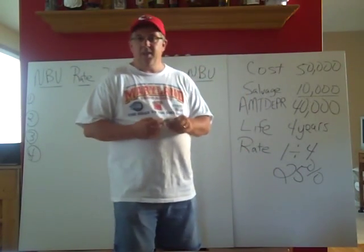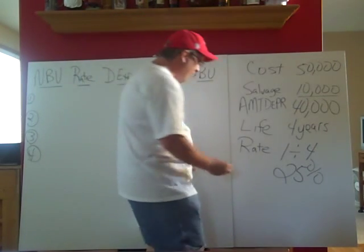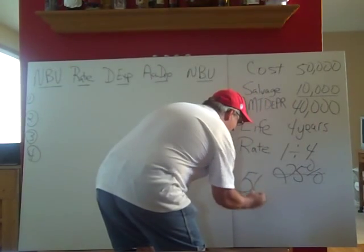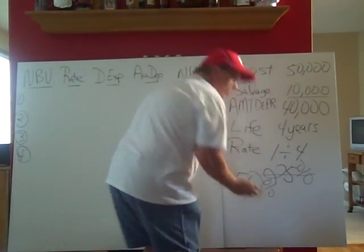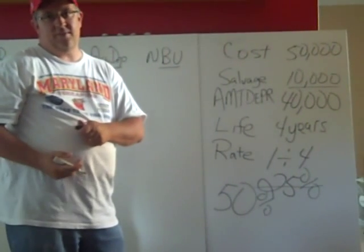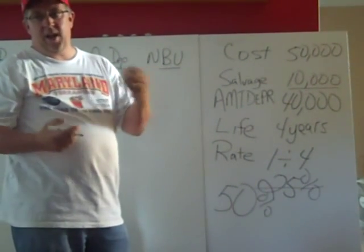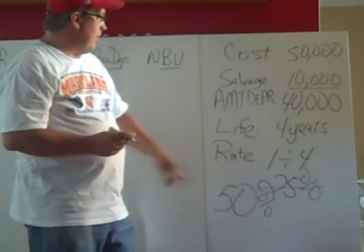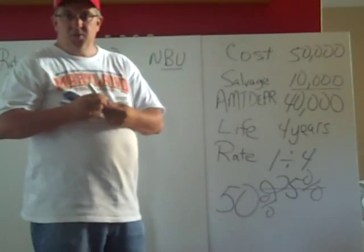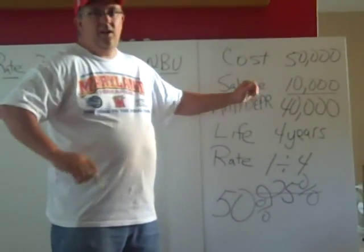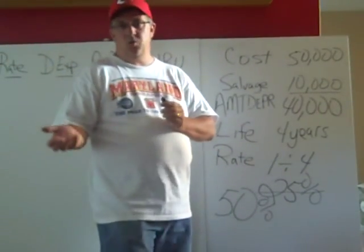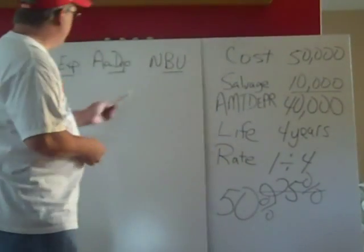Under double declining balance, we're going to double that rate. So instead of taking 25% per year, we're actually going to take 50% per year. So we're going to have more depreciation expense at the beginning of the useful life of the asset than we are at the end of the four years. The other difference is instead of starting off with the amount to be depreciated, under double declining balance we're starting off at cost and depreciating down to salvage value.